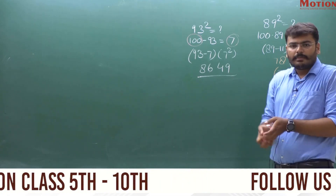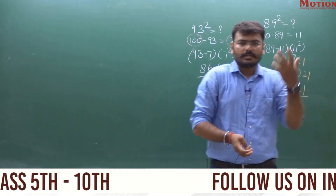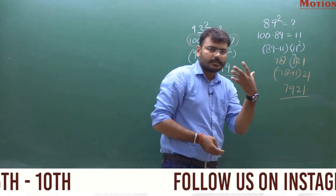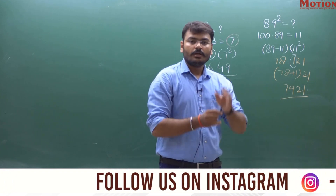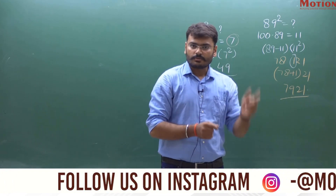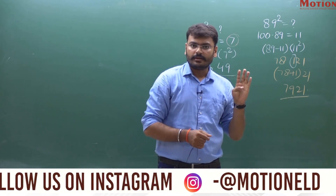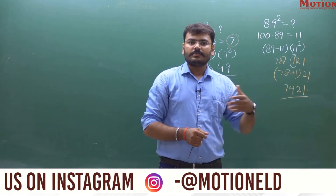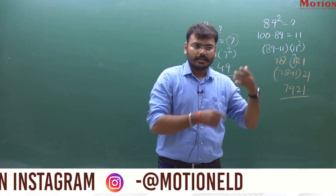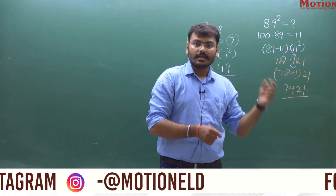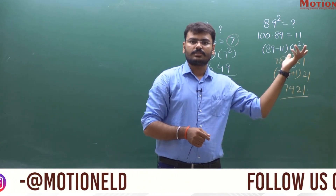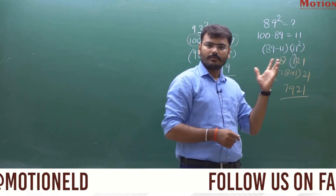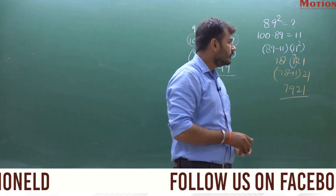It's very simple — you can do this mentally, no board or rough work needed. For 93 squared: 93 is 7 less than 100, so 7 squared is 49 for the last two digits, and 93 minus 7 is 86. So 8649 is the square of 93.